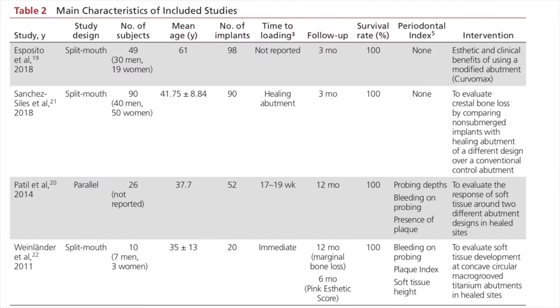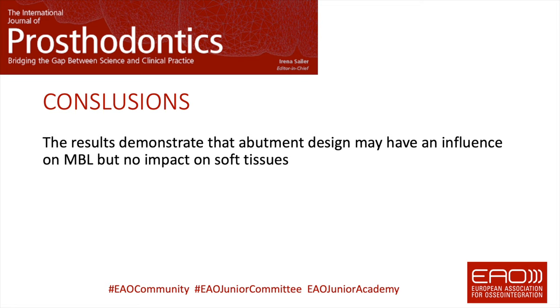The included studies compared the outcome of a curved or concave abutment versus a traditional divergent convex abutment. Detailed results, discussion, and conclusions can be read in the article. We can conclude that abutment design may have an influence on marginal bone loss but no impact on soft tissue. There is plenty of room for further research on this topic.